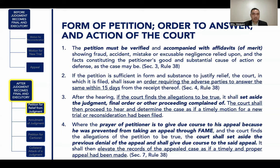If the petition is sufficient in form and substance to justify relief, the court shall issue an order requiring the adverse party to answer within 15 days from receipt. After hearing, if the court finds the allegations to be true, it shall set aside the judgment, final order, or other proceeding complained of, and shall then proceed to hear and determine the case as if a timely motion for new trial or reconsideration had been filed. Where the prayer is to give due course to the appeal because the petitioner was prevented from taking an appeal through FAME, the court shall set aside the previous denial of the appeal, give due course to the appeal, and elevate the records as if a timely and proper appeal had been made.